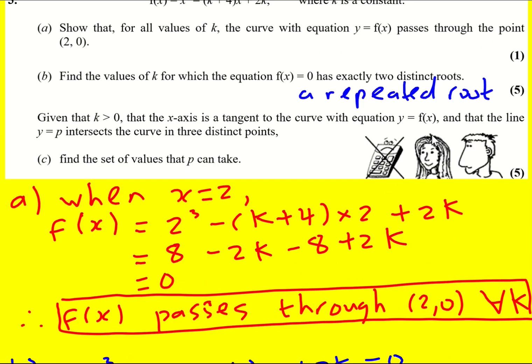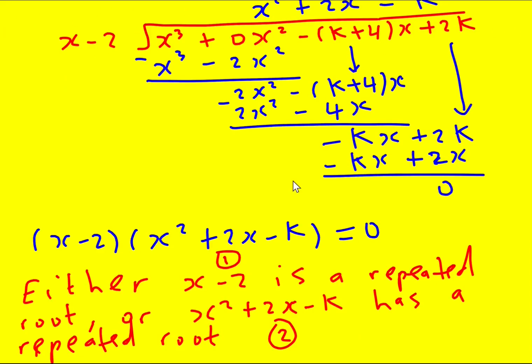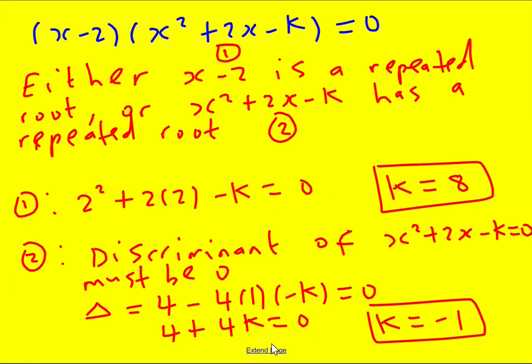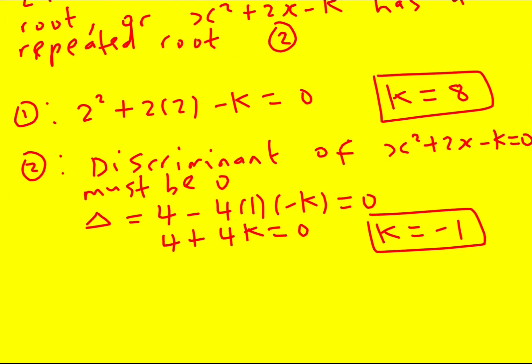We were asked at the start to find the values of k for which the equation has exactly two distinct roots, and we've just done that. I'm just going to write by it just to emphasize: x-2 repeated root. I've not actually found the repeated root in this case, but I'm not too worried. So I think I'll just leave it like that.